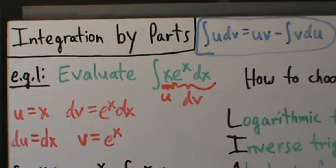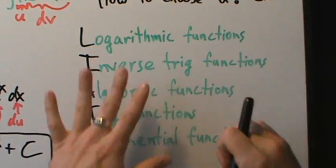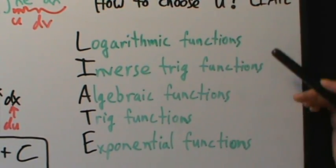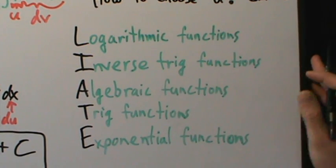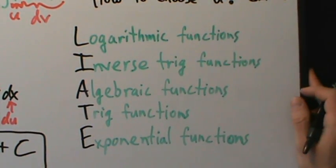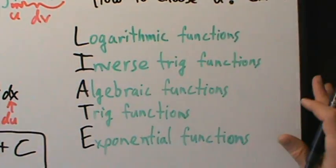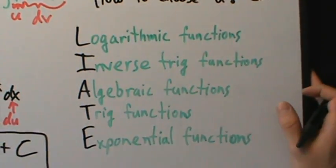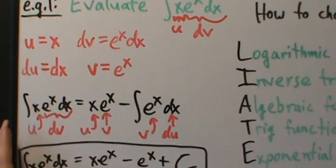That's integration by parts example one, with an explanation of how to use it. If you want more details about where the formula comes from, check the video description — there's a link to an article in a math journal from 1983 available free on JSTOR. In the next video, we'll discuss why we don't need the arbitrary constant when finding v, and then we'll do more examples after that.